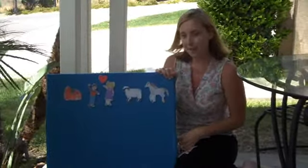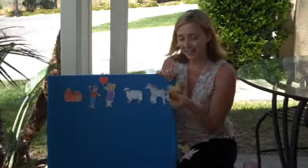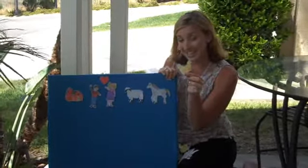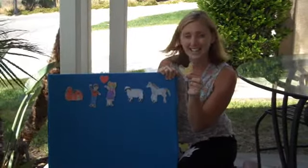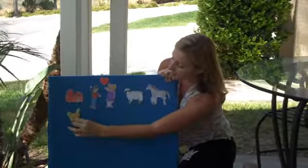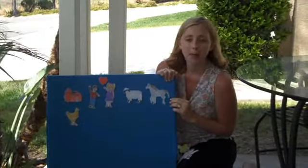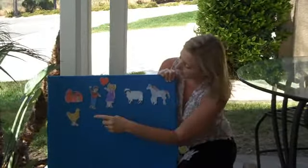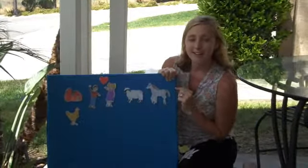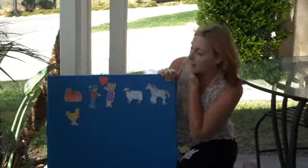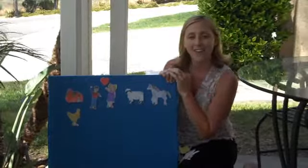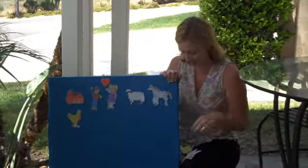And on that farm he had a... What kind of animal do you think that is? A chicken. Right. And what sound does a chicken make? Bawk, bawk, bawk. With a bawk bawk here and a bawk bawk there. Here bawk, there bawk, everywhere bawk bawk. Old MacDonald had a farm, E-I-E-I-O.